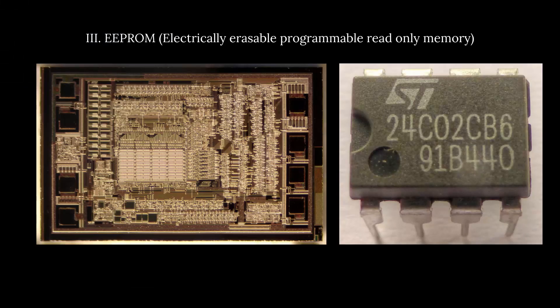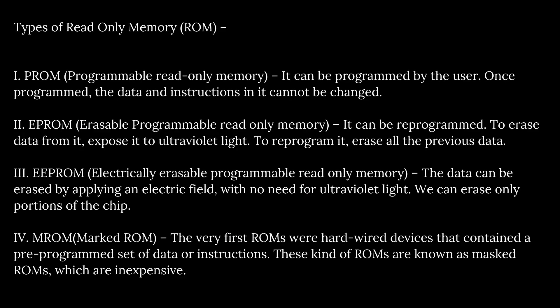EEPROM, electrically erasable programmable read-only memory — the data can be erased by applying an electric field with no need for ultraviolet light; we can erase all portions of the chip. MROM, mask ROM — the very first ROMs were hardwired devices that contained a preprogrammed set of data or instructions; these kinds of ROMs are known as mask ROMs, which are inexpensive. The information in this presentation is from javatpoint.com/ROM. Thank you so much.